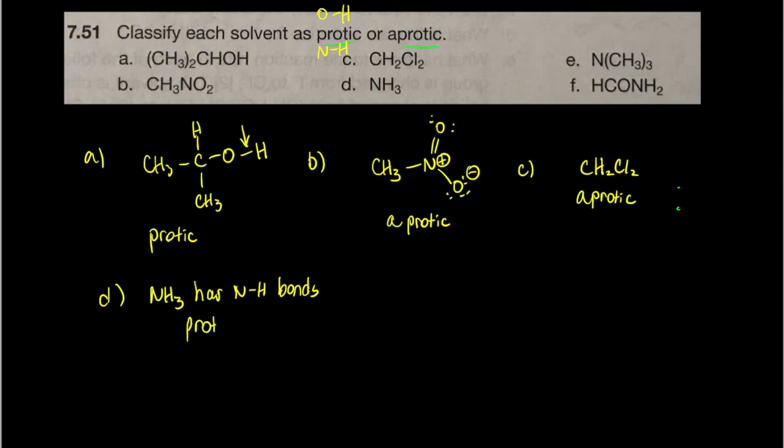The next one, N(CH3)3, we've got nitrogen with three bonds, but in none of this are there any nitrogen-hydrogen bonds, so we're going to label this aprotic.